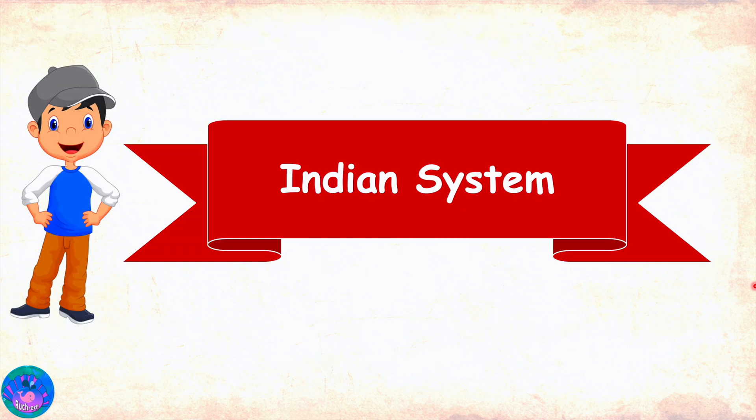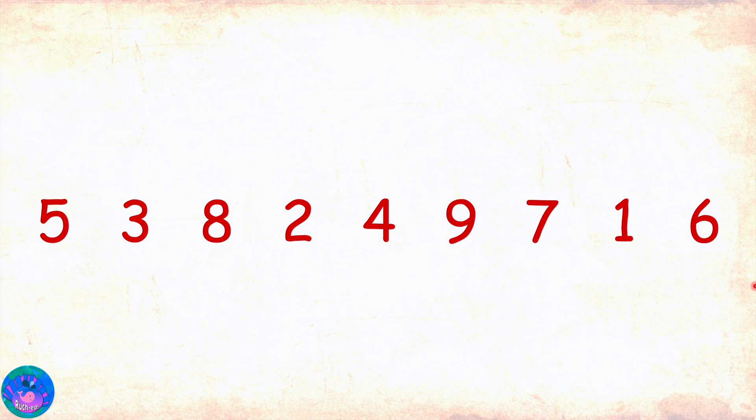Now, let's come to the Indian system. Let's take a nine-digit number again. The first period for Indian systems is also ones, comprising of ones, tens and hundreds places. Now, all other periods in this system are not of three places, but two places.